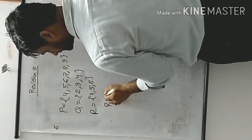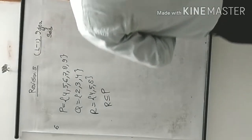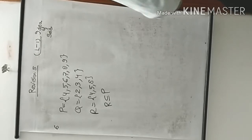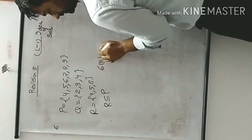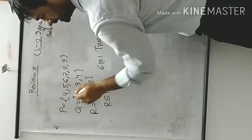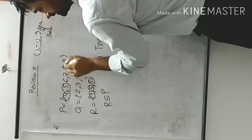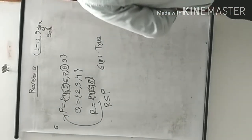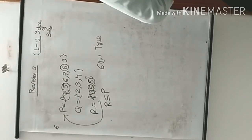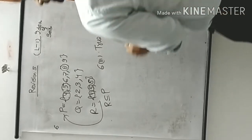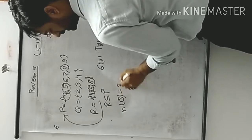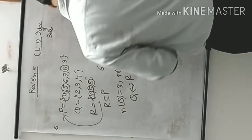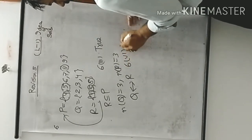Also checking: N(Q) = 3 and N(R) = 3, so they have equal cardinal numbers. Therefore Q is equivalent to R — the sixth part is also true.